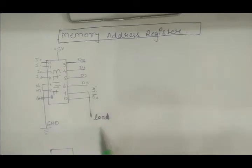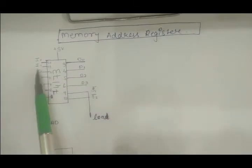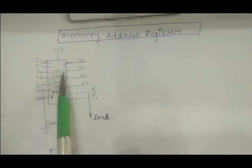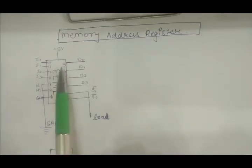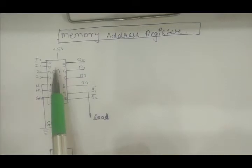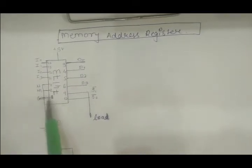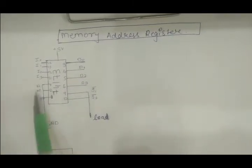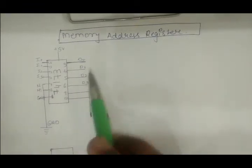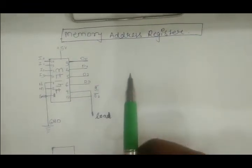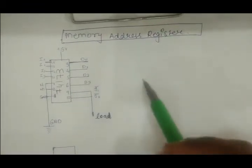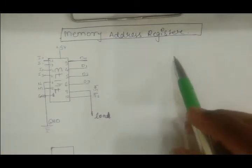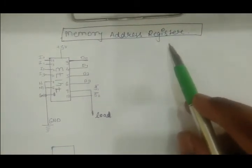These are the load signal pins. If we give this load signal — which is an active-low signal — if we make this signal low, the value from the inputs will be loaded into the 74173 register and stored inside it. These are the ground signal pins and these are the output signal pins.